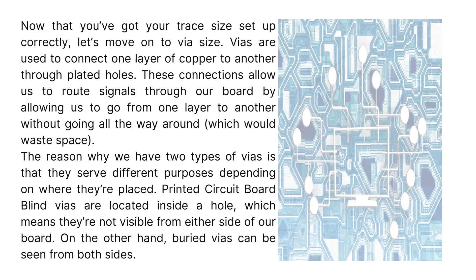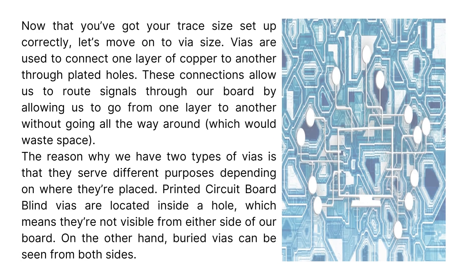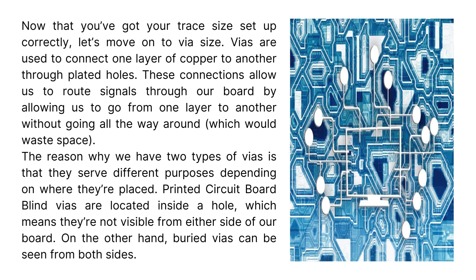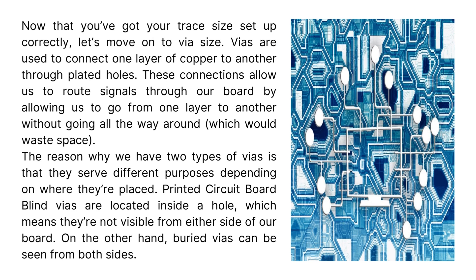Now that your trace size is set up correctly, let's move on to VIA size. VIAs are used to connect one layer of copper to another through plated holes, allowing signals to route through the board without going all the way around, which would waste space. There are two types of VIAs: blind VIAs are located inside a hole and are not visible from either side of the board, while buried VIAs can be seen from both sides.